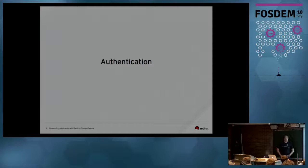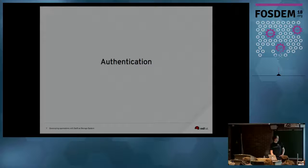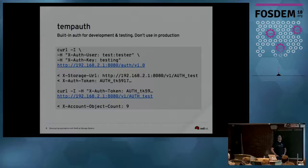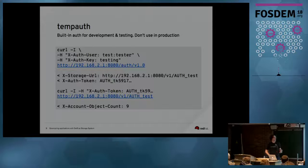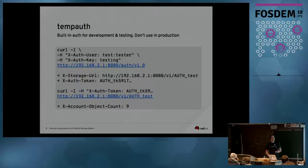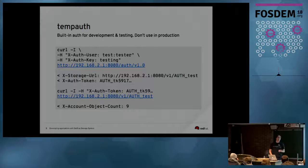In most cases, we need some authentication for storing or reading data. When you start developing applications with Swift, you might want to run Swift only — you don't need the full OpenStack environment with Keystone, a database, and so on. We have a built-in middleware called TempAuth. We actually use it for development purposes as well as demos and showcasing. Don't use it in production, because the credentials are stored in plain text in the proxy server configuration file. Using this, you just send two headers — xosuser and xoskey — and Swift returns a storage URL and authentication token that you use from then on.